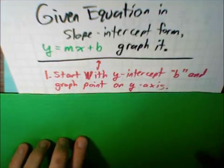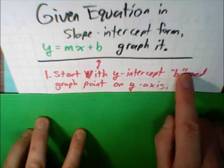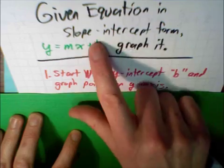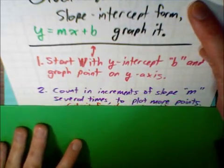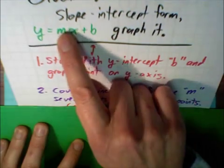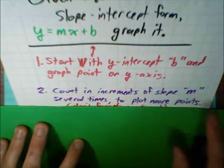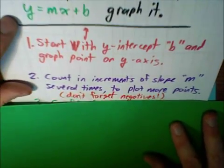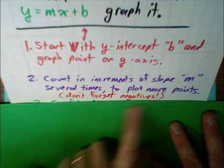We're going to use y equals mx plus b to graph it. What we do is we start with the y-intercept, the b form. We graph this point on the y-axis. It's just a single dot that we start from. Second, we count in increments of the slope. m is the slope. We're going to count in increments of the slope from the y-intercept several times to plot more points. Don't forget to go in the negative direction.